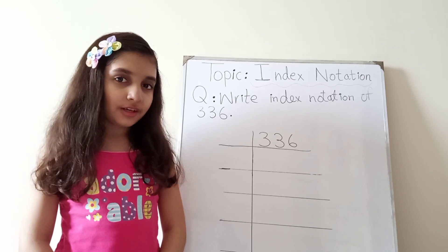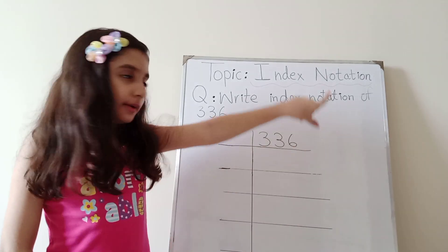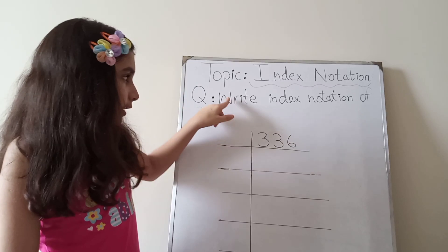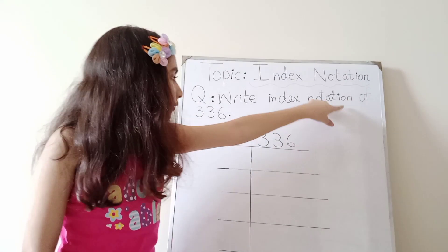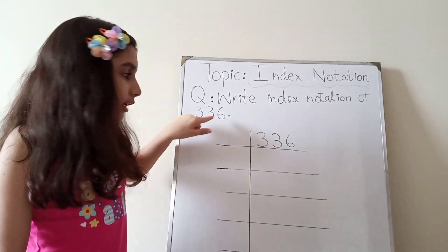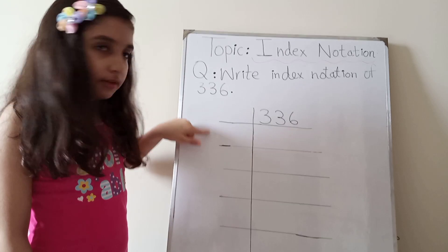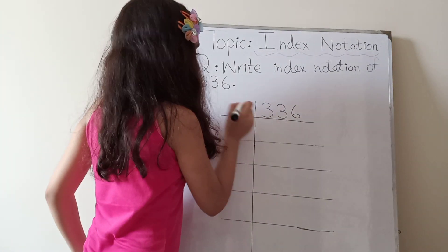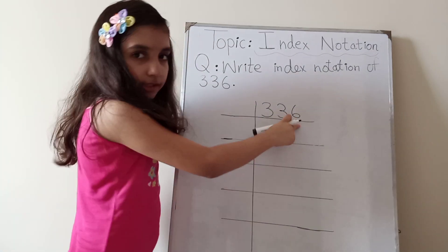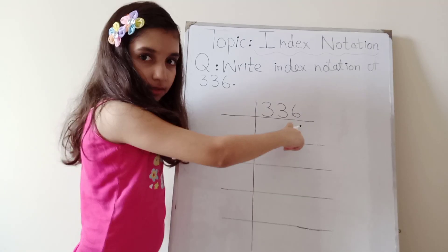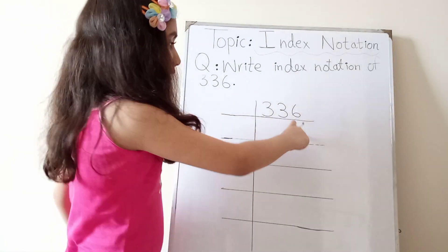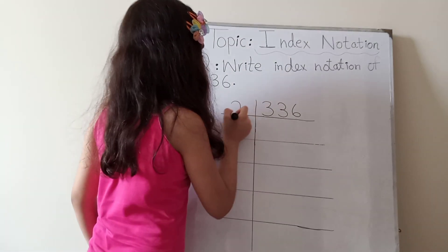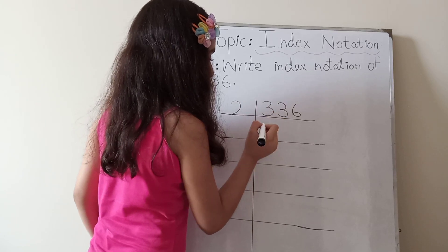Asalaam alaikum friends, today my topic is index notation and the question is: find the index notation of 336. First I will take the prime factorization. 6 is an even number so it is divisible by 2. Two ones are two, one is carry here.